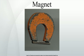A wire in the shape of a circle with area A and carrying current I is a magnet, with a magnetic moment of magnitude equal to IA.